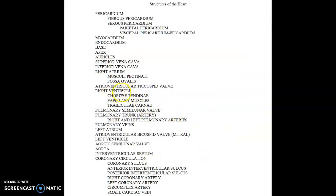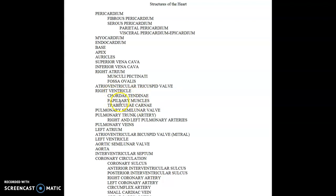To summarize: we discussed the right atrium, the pectinate muscles, the fossa ovalis, and the atrioventricular tricuspid valve — between the atrium and ventricle with three cusps. The bicuspid valve on the left is also called the mitral valve. The papillary muscles are cone-shaped muscles that brace the chordae tendineae attached to the tricuspid valves once blood is pushed through. The muscle patterns of the ventricles are called trabecula carnea.